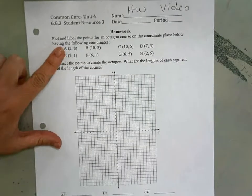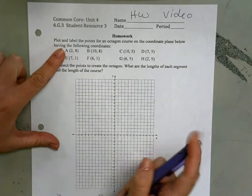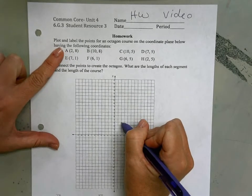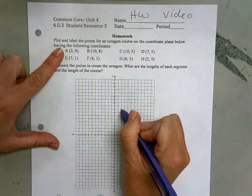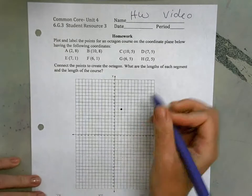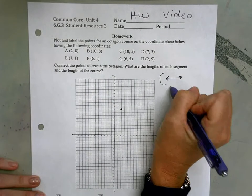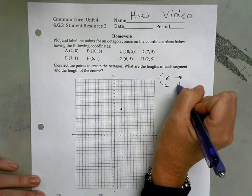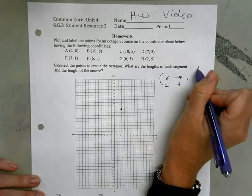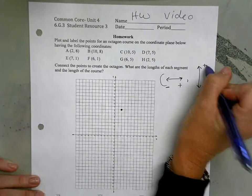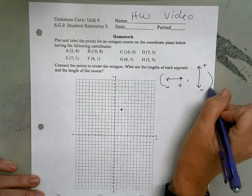So my point A is at positive 2, positive 8. 1, 2, 3, 4, 5, 6, 7, 8. And we've talked about in class, and a lot of you really seem to master, that the first number tells us left or right, left if it's negative, and right if it's positive.